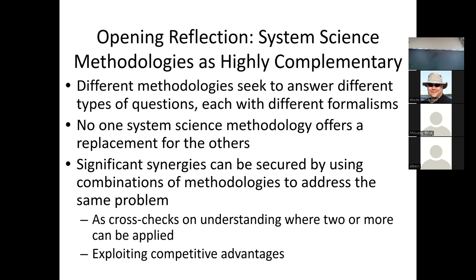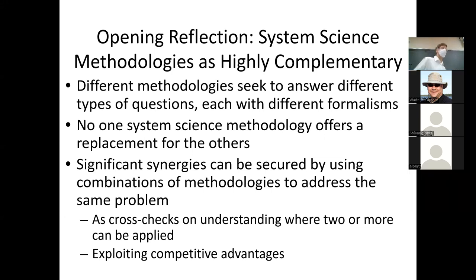Discrete event simulation asks questions about how the availability of resources impacts throughput — how many people could be treated per day, how long the line is for treatment, where placement of resources would help. System dynamics often focuses on shifting mental models with simple models and understanding feedback-rich systems with accumulation. Agent-based modeling focuses on situated agents in context, interacting with each other in the environment. No one system science methodology offers a completely satisfactory replacement for another.